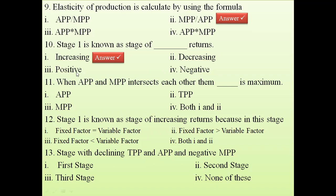Question 11: When APP and MPP intersect each other, APP is maximum. That is the point where stage two starts — where APP equals MPP, meaning they intersect at that point. At that point, APP is at its maximum.